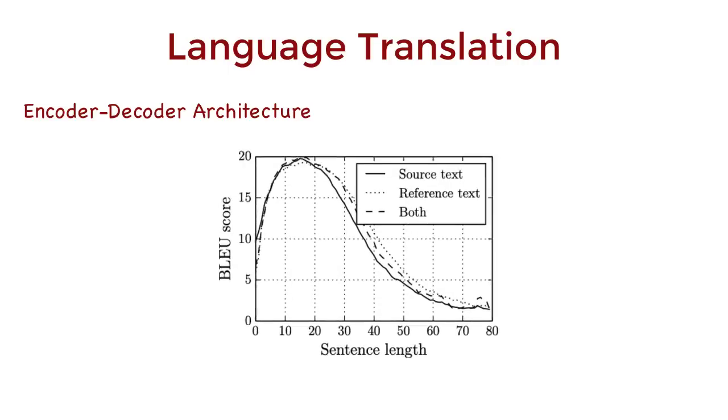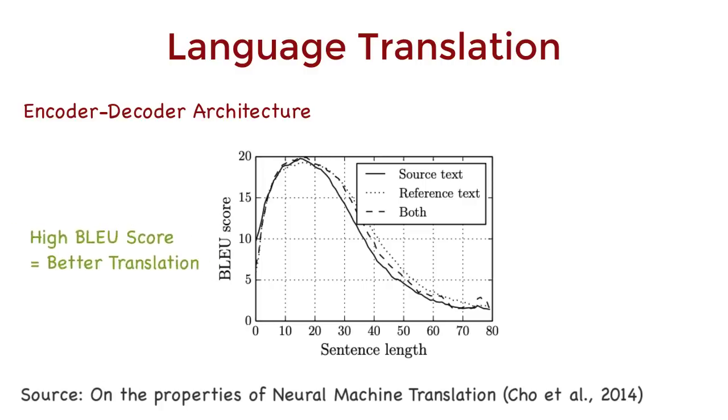In fact, if we take a look at performance, the x-axis here represents the number of words in the sentence, and the y-axis is the blue score. It's basically the accuracy of translation. Higher the blue score, better is the performance. So, it looks like this encoder-decoder architecture works well for medium-length sentences with about 15 to 20 words.